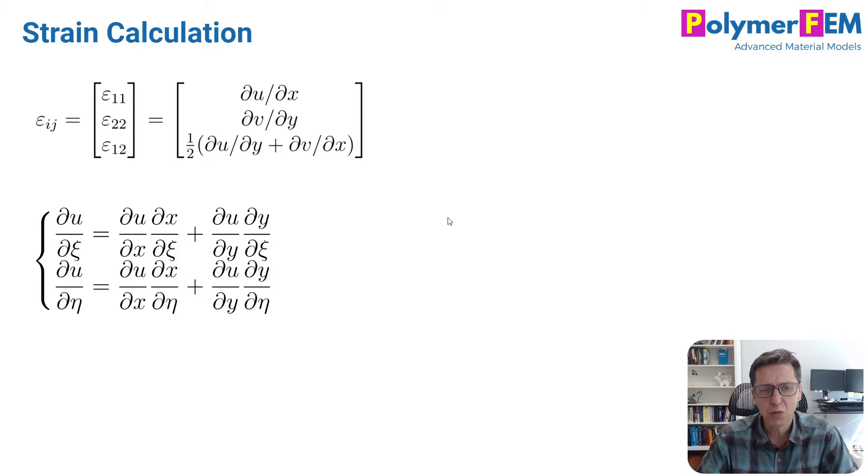And it's not so easy to do it first here, because the finite element has a funny shape. And that's why we introduce the shape functions. So instead of directly calculating this partial derivative of u with respect to x, for example, I will do it by looking at first the partial derivative of u with respect to natural coordinates, psi and eta, which is part of the shape functions.